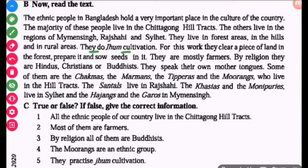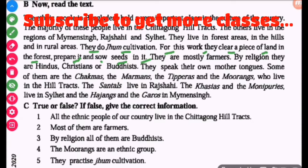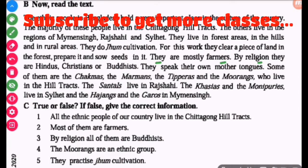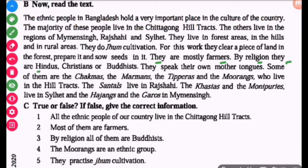They do Jum cultivation. For this work, they clear a piece of land in the forest, prepare it, and sow seeds in it. They are mostly farmers. By religion, they are Hindus, Christians, and Buddhists.